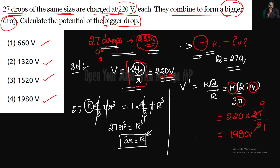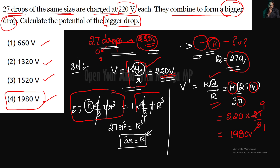Look at the drop potential — it is a very simple concept. The potential of this small drop: when we have 27 drops combining, it is a combination of 27 small drops. I need to find the radius: adding the volume of 27 drops equals one big drop volume. Finally, I can say that 3 small r equals R.